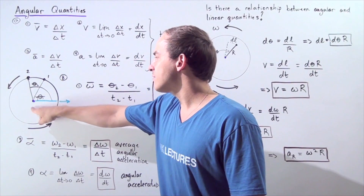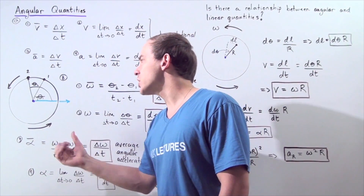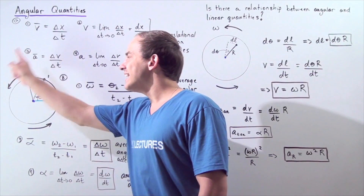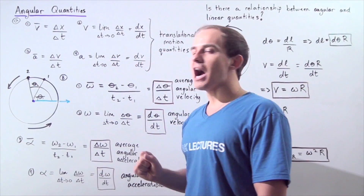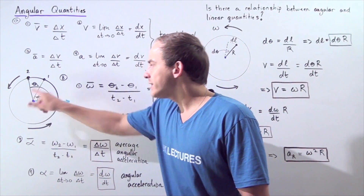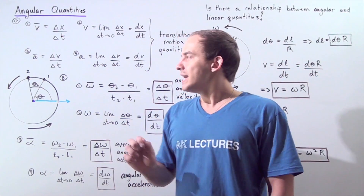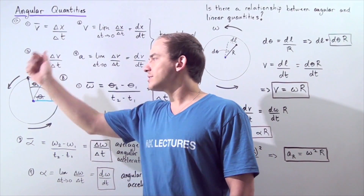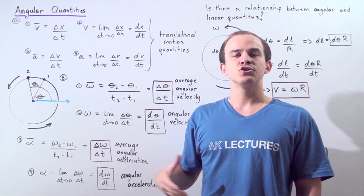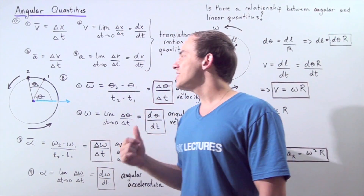Suppose we have a two-dimensional object that is rotating in the counterclockwise direction. This point is our axis of rotation. Whenever the object rotates in the counterclockwise direction, the object is said to rotate in the positive direction.